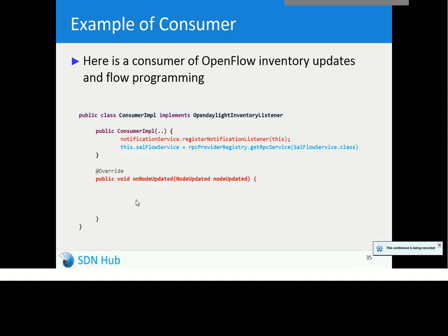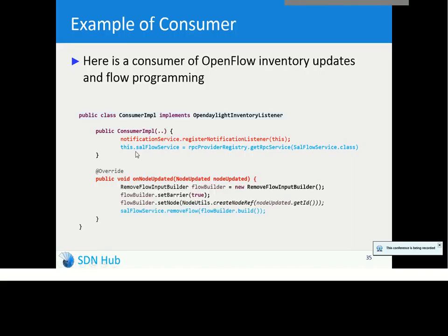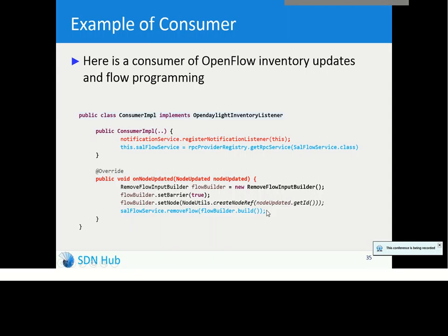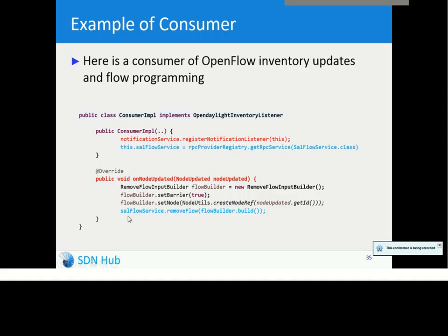As an operation, let's say the consumer wants to delete all the existing flows in a switch, which is a common thing most controllers try to do. I would use a handle to the flow service. The consumer gets a handle to the flow service by doing a getRPCService function call. Once I have a handle on that particular flow service, I can make an RPC call on it. The last line says I want to remove all the flows in that particular switch. So here I am receiving a callback for a notification and I am performing an RPC call — this is typically what a consumer would do.